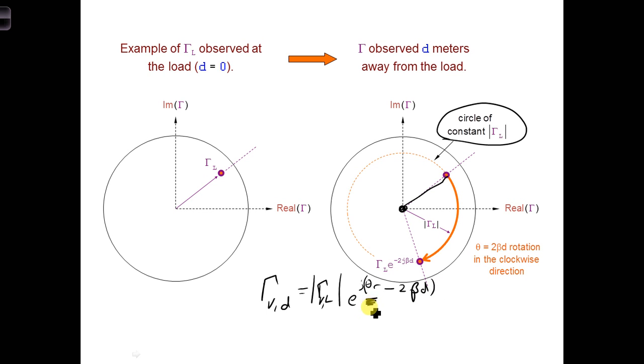We already accounted for theta R when we plotted the reflection coefficient at the load. It was already at 51 degrees. So now we just need to rotate by minus 2 beta D. We rotate along a circle of constant reflection coefficient, a constant radius from the center. That's a circle of constant radius around the center of the Smith chart.